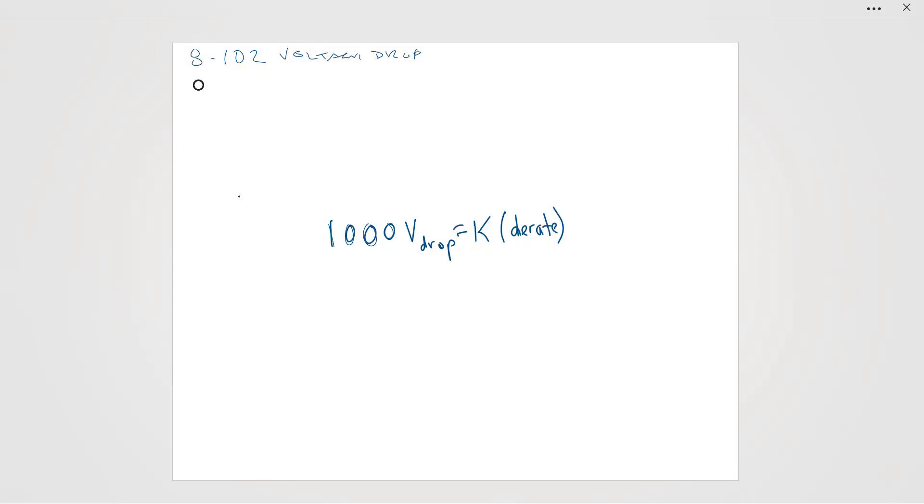I'm just going to call it D rate because we can call variables whatever we want, times F, which is the F factor that you see in table D3 from note two, times the current, which is the load current in amps, times the L, which is the conductor length in meters.